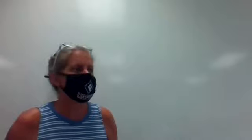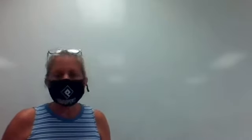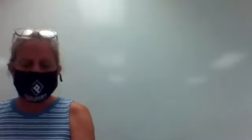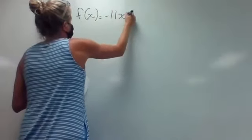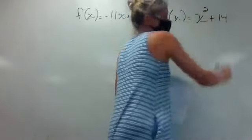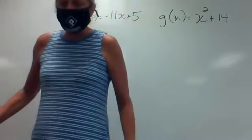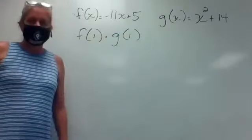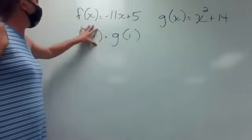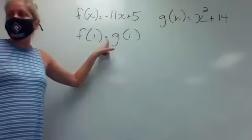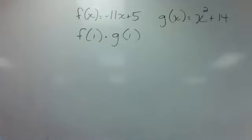We're going to continue with section 2.4 today. It's going to start off very exactly like what we finished on Monday. On number six, the two functions given are f of x equals negative 11x plus five and g of x equals x squared plus 14. It wants me to find f of one times g of one. I'm going to find f of one and g of one, then multiply those two solutions together.